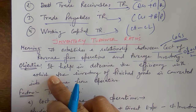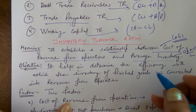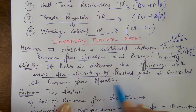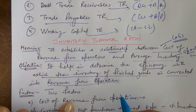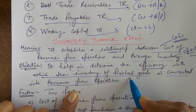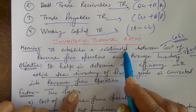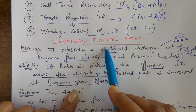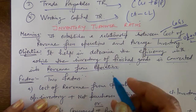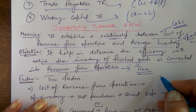The purpose of ITR: it helps in determining the efficiency with which the inventory of finished goods is converted into revenue from operations — how speedily the finished goods inventory is converted into revenue from operations. This is the objective of calculating ITR. We express this ratio in times.